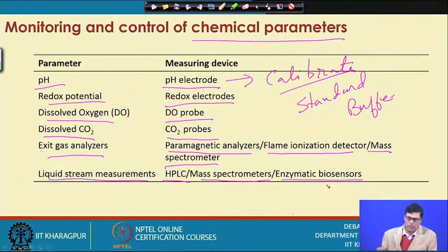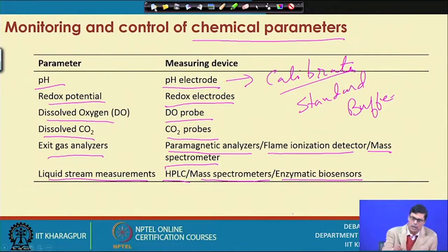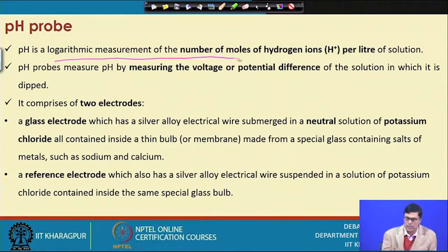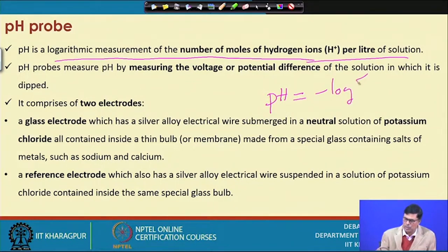For example, if I want to measure how much glucose is present, we use a glucose sensor to find out the glucose concentration in the outgoing liquid. pH is a logarithmic measurement of the number of moles of hydrogen ions per liter: pH = −log[H⁺].